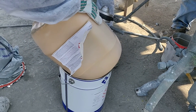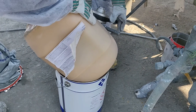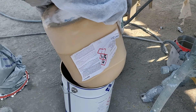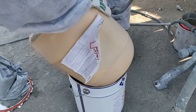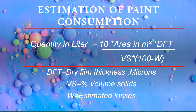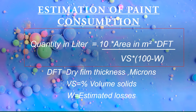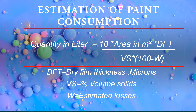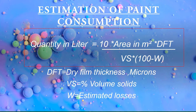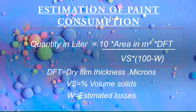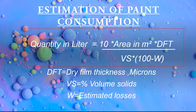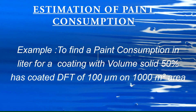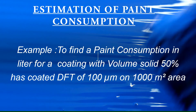Here we are going to estimate the paint consumption. Quantity in liters can be obtained using this equation: Quantity (liters) = 10 × area (m²) × DFT ÷ (volume solid × (100 − estimated losses)).